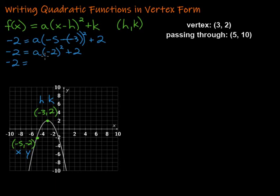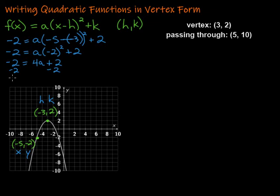I would suggest flipping the terms when you rewrite it here. So negative 2 squared would be 4a — we can do that because we can multiply in any order we want. This puts it in a form that looks more familiar rather than having the 4 on the other side of the a. Continuing on, trying to get a by itself: we subtract 2 on both sides, we get negative 4 equals 4a, then divide by 4, and we're left with a equals negative 1.